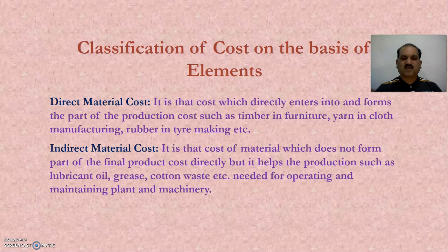Direct material cost is that cost which directly enters into and forms a part of the production cost, such as timber in furniture, yarn in cloth manufacturing, rubber in tire making, etc.